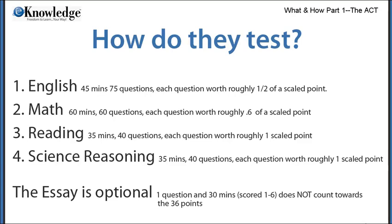The four subtests appear in this order. First is English, which is really a grammar test — 45 minutes, 75 questions, and each question is worth approximately one half of a scaled point. Math is 60 minutes with 60 questions, and each question is worth approximately 0.6 of a scaled point. Then there's reading — 35 minutes, 40 questions — so each question is worth roughly one scaled point. And then science reasoning — 35 minutes, 40 questions — also worth approximately one scaled point each. The optional essay is one question with 30 minutes to answer it, scored on a scale from one to six, but it does not count towards the 36-point overall ACT grade.